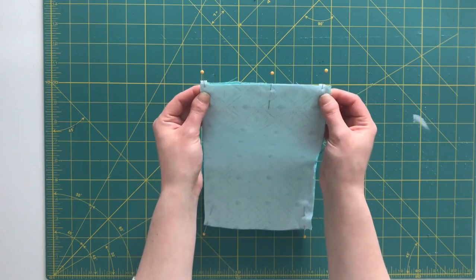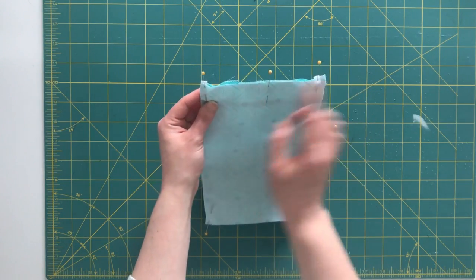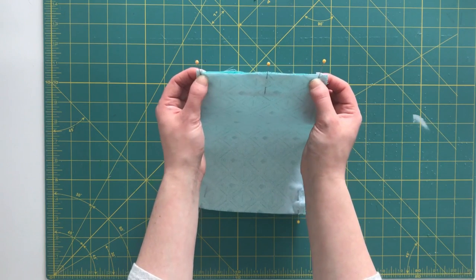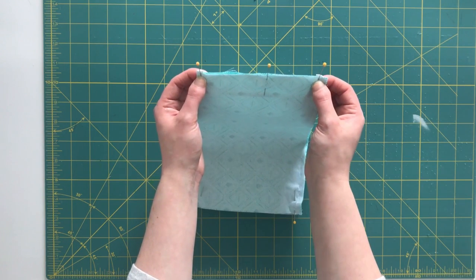Okay, so now that my elastic is pinned into place, I can sew across both sides. And I'll want to make sure that I'm backstitching really well across this elastic so it's secure in there.